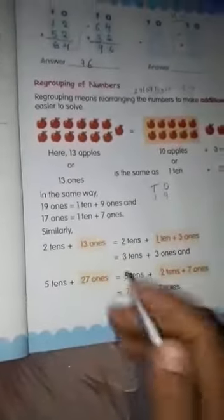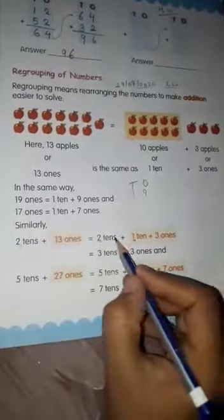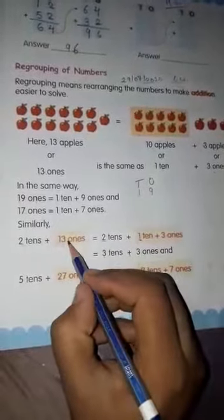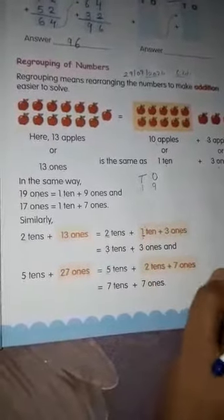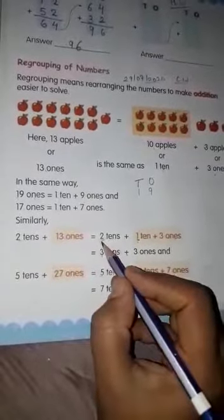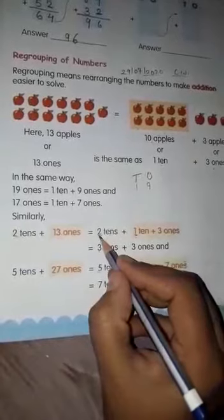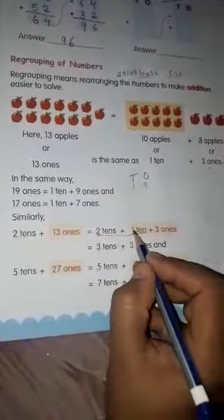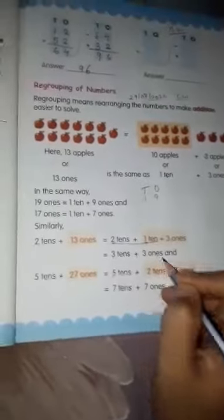Now, we have to rearrange 13 ones. It is equal to 2 tens as it is plus 13 ones. Now we have to rearrange the numbers. So next step is what we will do. 2 tens and 1 ten is equal to 3 tens and 3 ones as it is.